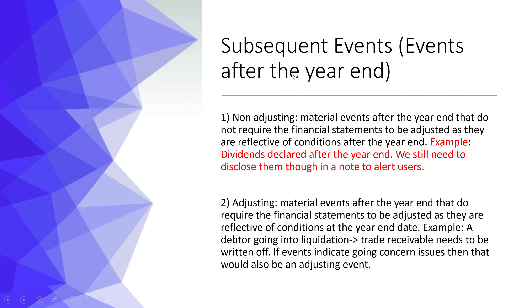Subsequent events are events that happen after the year-end, and we have to consider if they're material to the users — if the users would want to know about them. They fall into two categories. You have non-adjusting events, which are events that happen after the year-end but are not reflective of conditions at the year-end, so there are no adjustments to the statement of financial position or the statement of profit and loss.